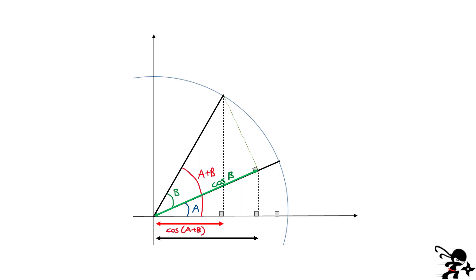Now we project the green segment onto the x-axis, shown by the black arrow. I don't have a unit length anymore because I'm only taking part of that segment and projecting it onto the x-axis. The length of the green segment was cosine of B, so its projection onto the x-axis is cosine of B multiplied by cosine of A. You can start seeing where these multiplicative terms are going to show up in the proof. Now we have to link similar triangles and look at the projections on the y-axis.